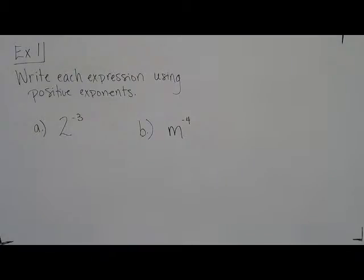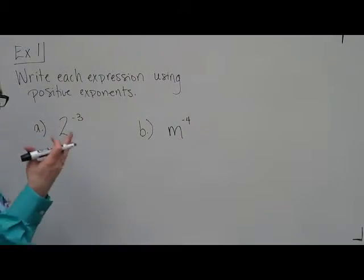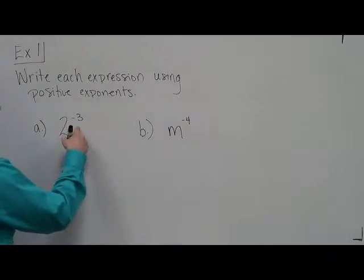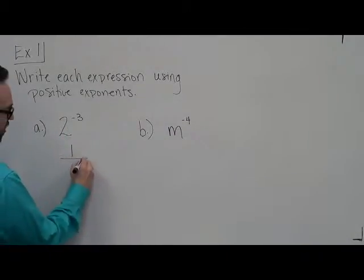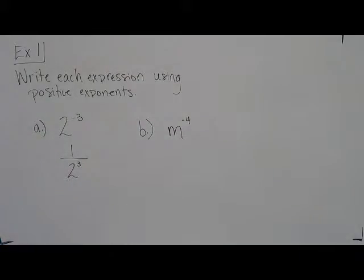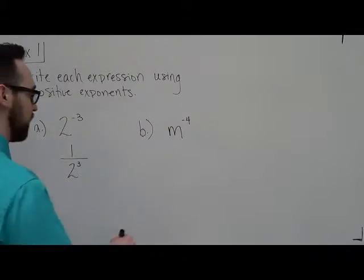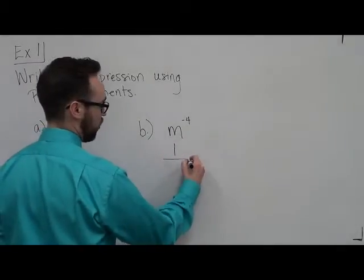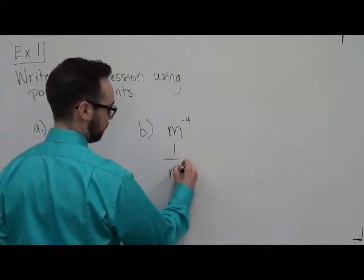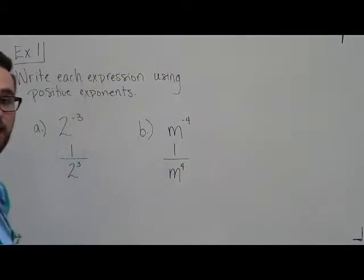What we want to do, again, we're just going to switch it, right? So this is the same as saying one over 2 to the positive 3. So you move it to the denominator, and you drop the negative. Because that negative takes care of moving it to the denominator. Same thing with the m. So you put one over m to the positive fourth.